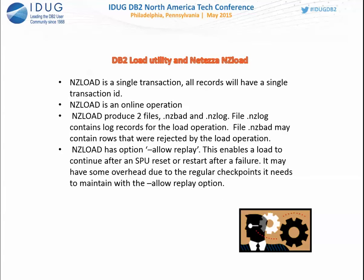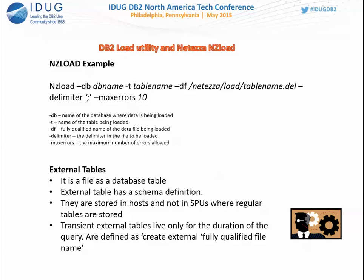NZ load is a single transaction — if you're loading 100,000 rows, all share the same transaction ID. NZ load produces two files: a log file (like DB2) and a BAD file containing rejected rows. Like DB2, you can specify an exception table. There's an allow-replay option so that if a blade server goes down mid-load, when it comes back up, the load restarts automatically. The syntax is: NZLOAD, database name, table name, data file, and the delimiter specification — very similar to how you load tables in DB2.